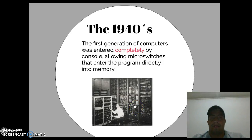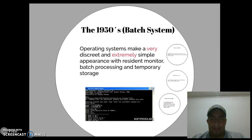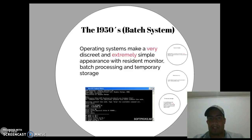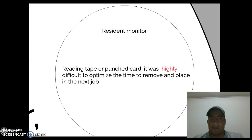1914. The first generation of computers was entered completely by console, allowing microswitches to enter the program directly into memory. The batch system operating system made a very discrete and extremely simple average by Resident Monitor, bus processing, and temporary storage. The Resident Monitor reacting type of user card is what's highlighting, to optimize the time they are removed and placed in the next job.